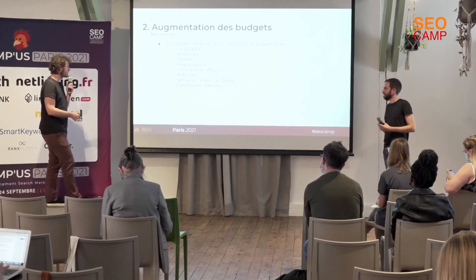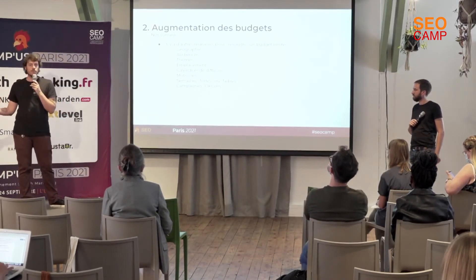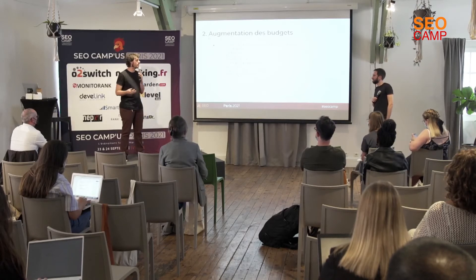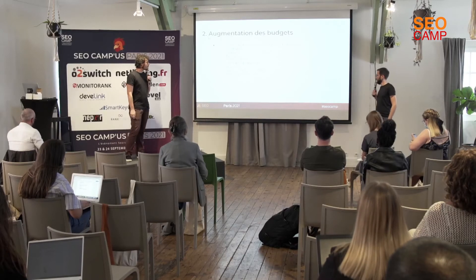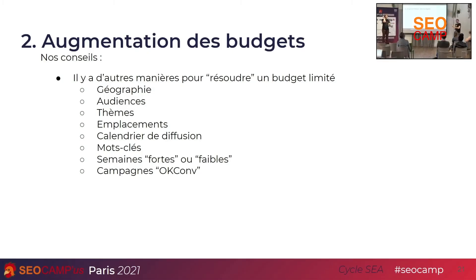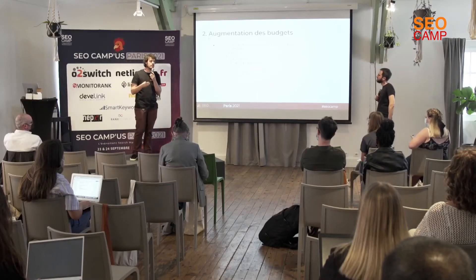C'est une méthode qu'on utilise, assez répandue : on a ce qu'on appelle les semaines fortes ou faibles. On va déterminer nous-mêmes les périodes où il est plus intéressant de dépenser plus de budget et d'autres où on va en dépenser moins, pour au final avoir un budget annuel stable et maîtrisé. On a aussi les campagnes OK Conversion — chaque fois qu'un mot-clé convertit, on va le sortir et le mettre dans une campagne spécifique où on sera d'accord d'augmenter le budget, parce qu'on sait que ce sont des mots-clés qui ont déjà performé dans le passé.